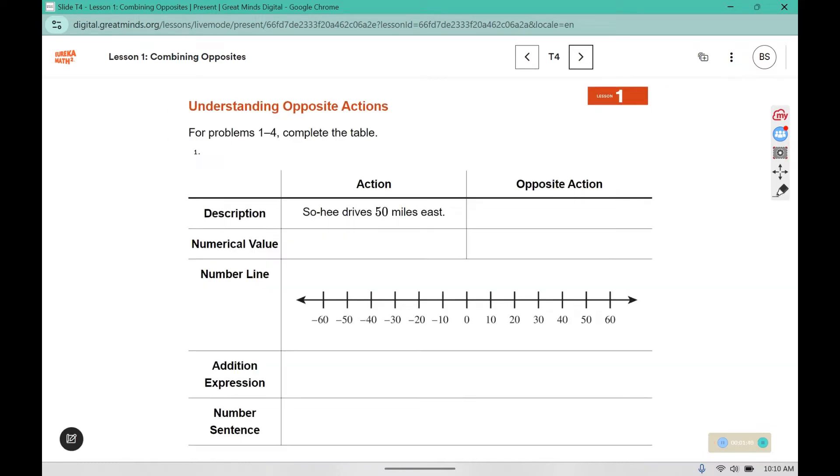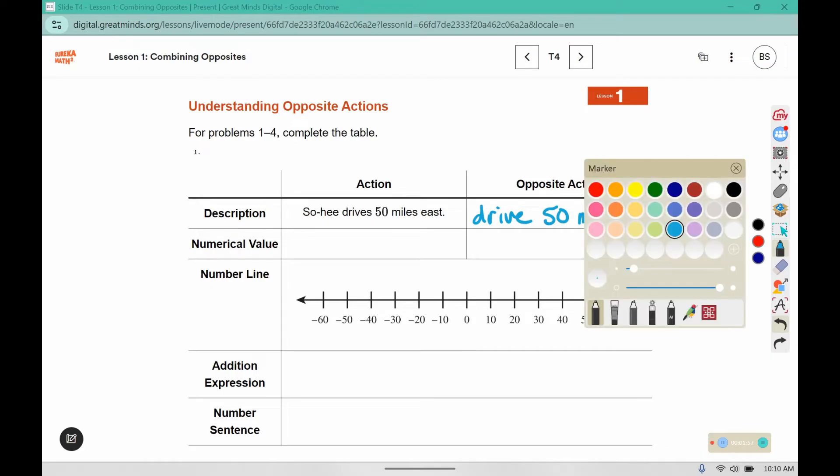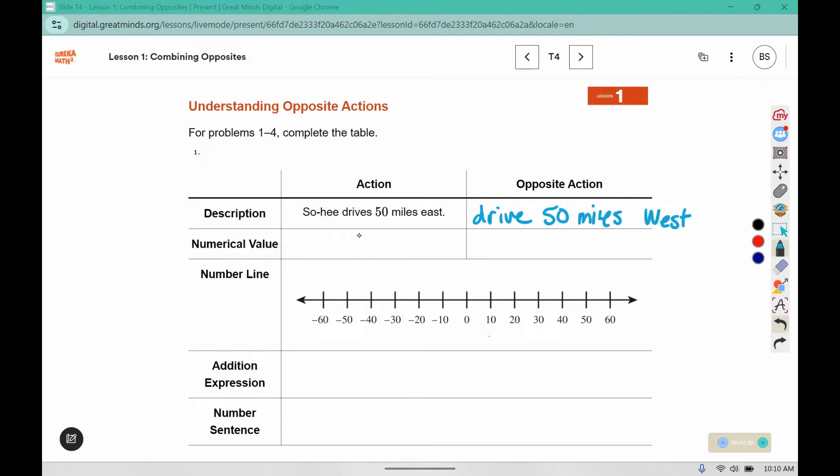Here it says for problems one through four, complete the table. The description says, so he drives 50 miles east. The opposite would be to drive 50 miles west. So the numerical value in this one would be 50. We can create that little north, south, east, and west.